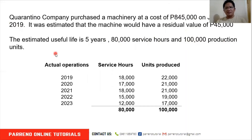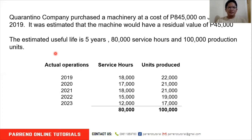There are assets that produce more in the earlier part of their useful life. For example, when you purchase a car to be used as a taxi or for rent, we are expecting that these cars will produce more income in the earlier part of their useful life, as lesser repairs are required.